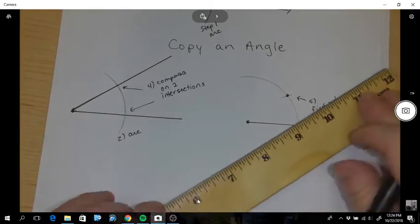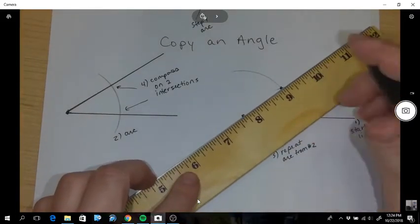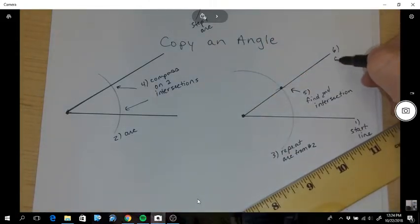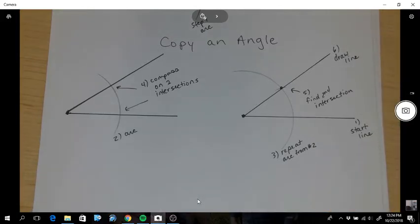And then your last step is to draw a line through that intersection with the vertex, and now we've copied the measure of that angle.